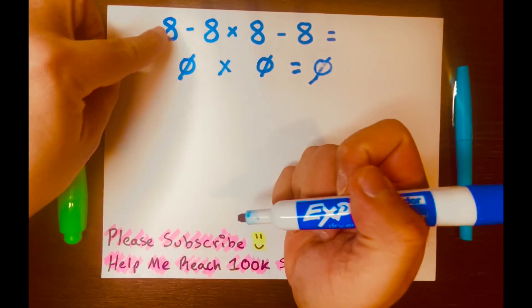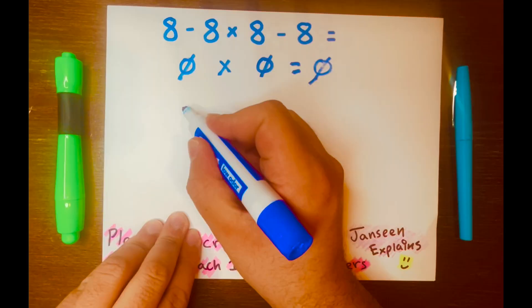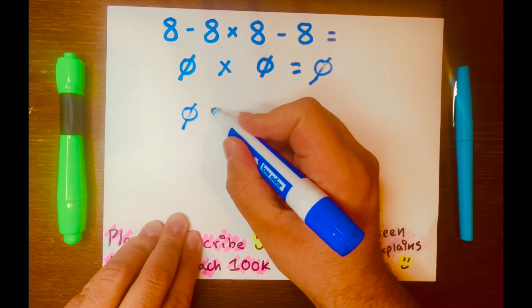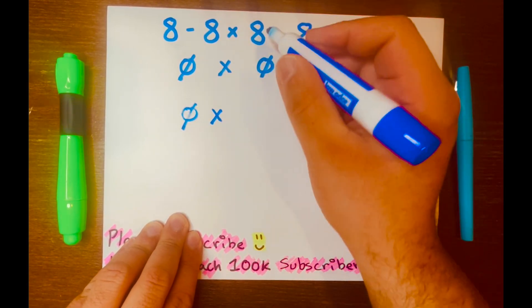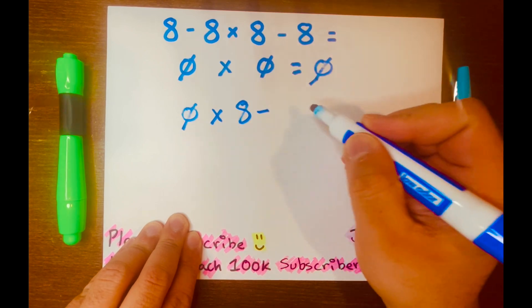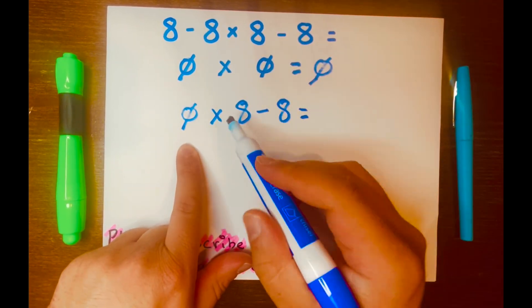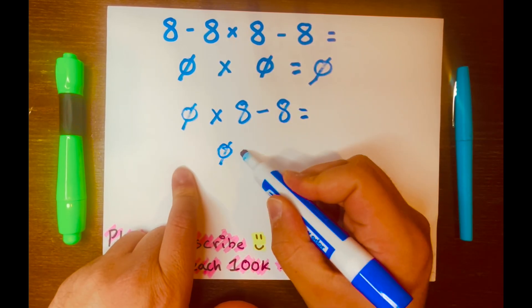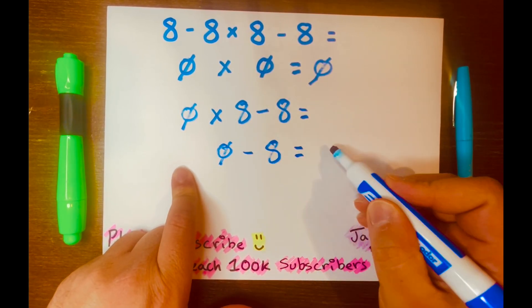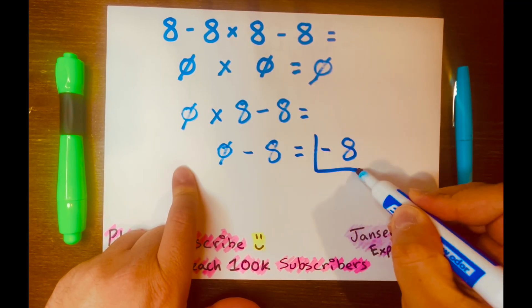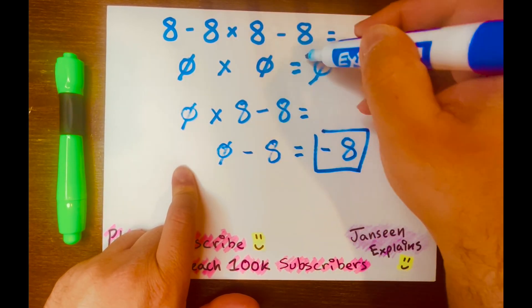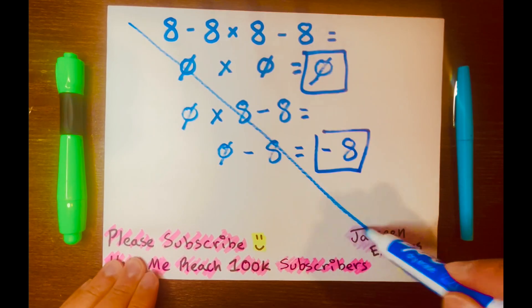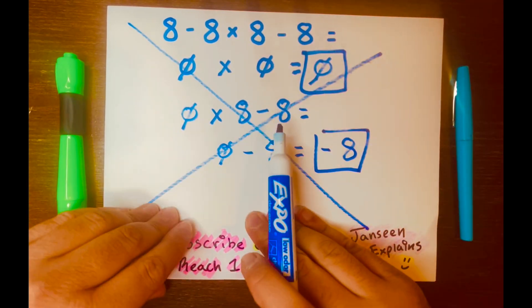Or they'll do this. 8 minus 8 is 0. They'll bring down the times symbol down, the 8 down, the subtraction symbol down, and the 8 down. And 0 times 8 is 0, minus 8 is negative 8. So the answer must be negative 8 or 0. And both answers are wrong.